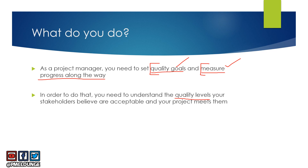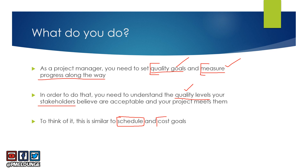Stakeholders will have certain expectations when it comes to quality, and you need to know what those expectations are — what are the required quality levels your project should meet. This is similar to schedule and cost goals: you may want to finish the project in eight months, or within $250,000. Similarly, there will be quality level goals. Six Sigma, for example, is a level of quality. Your project should have defined quality goals, and you as a project manager need to measure progress along the way.